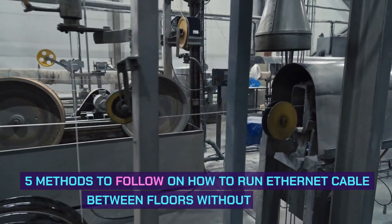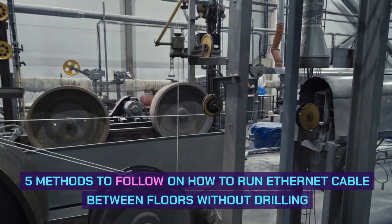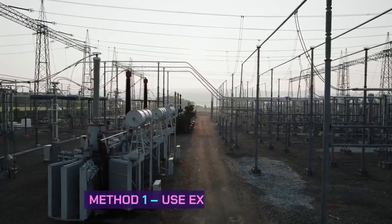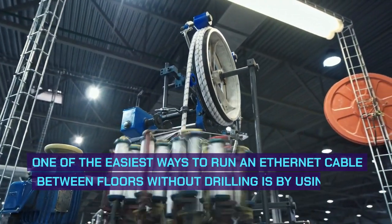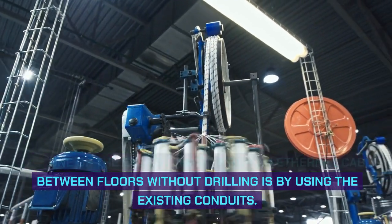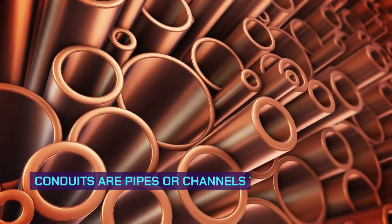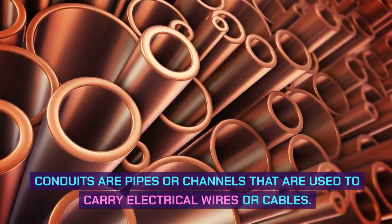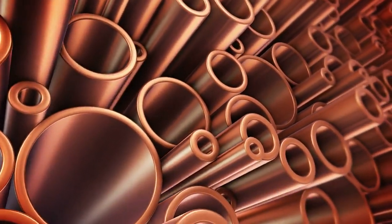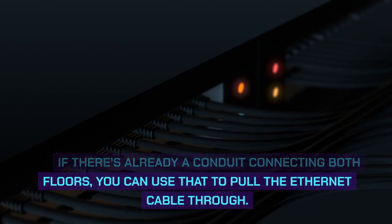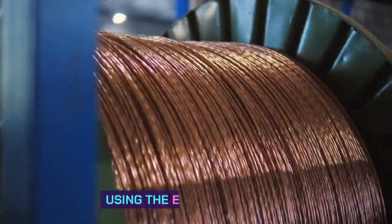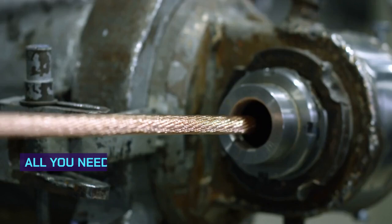Five methods to follow on how to run ethernet cable between floors without drilling. Method one: use existing conduits. One of the easiest ways to run an ethernet cable between floors without drilling is by using existing conduits. Conduits are pipes or channels used to carry electrical wires or cables. If there's already a conduit connecting both floors, you can use that to pull the ethernet cable through.